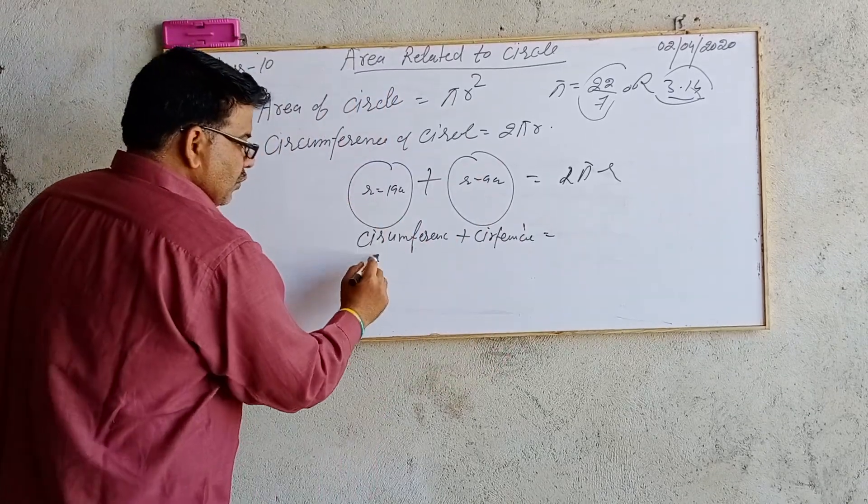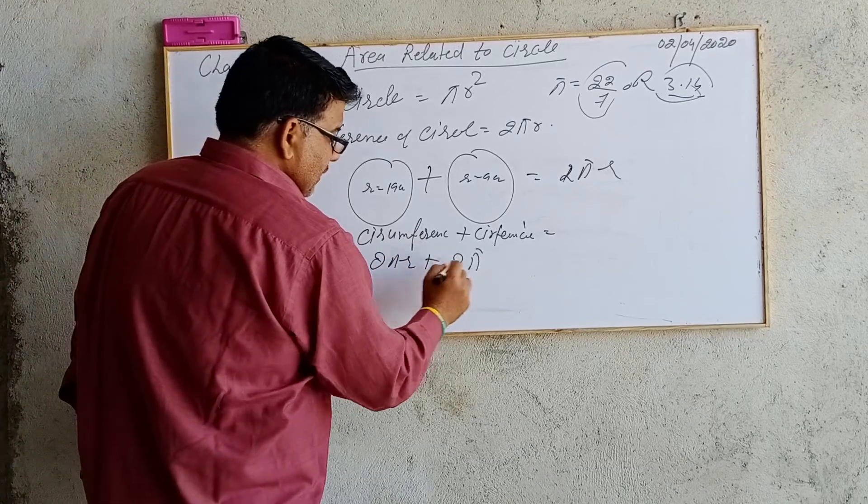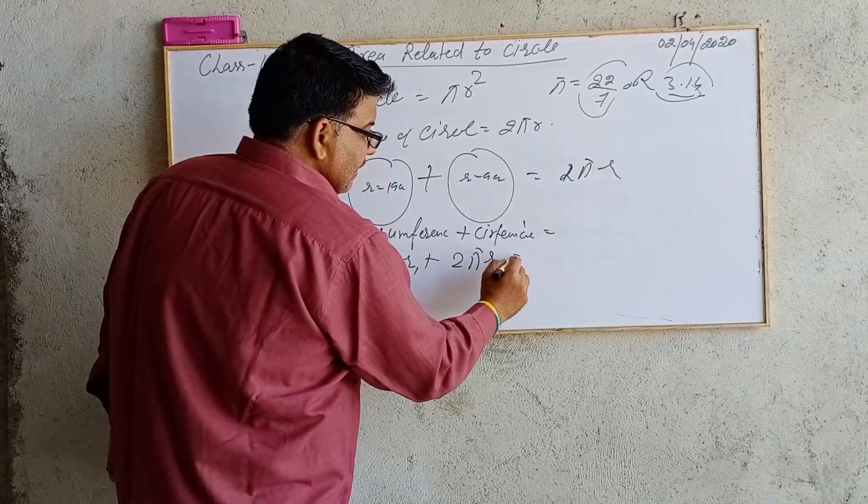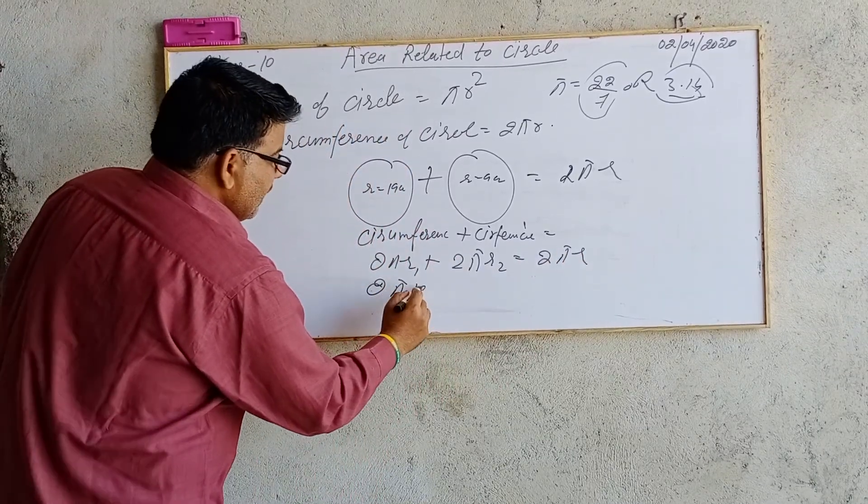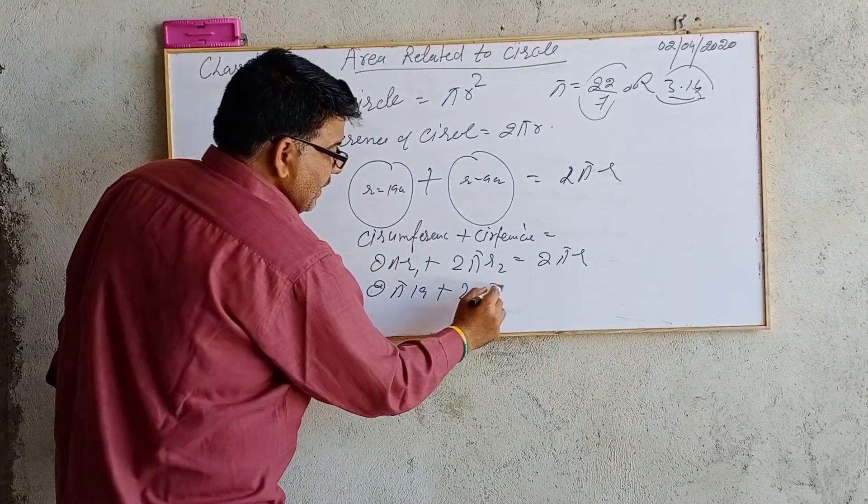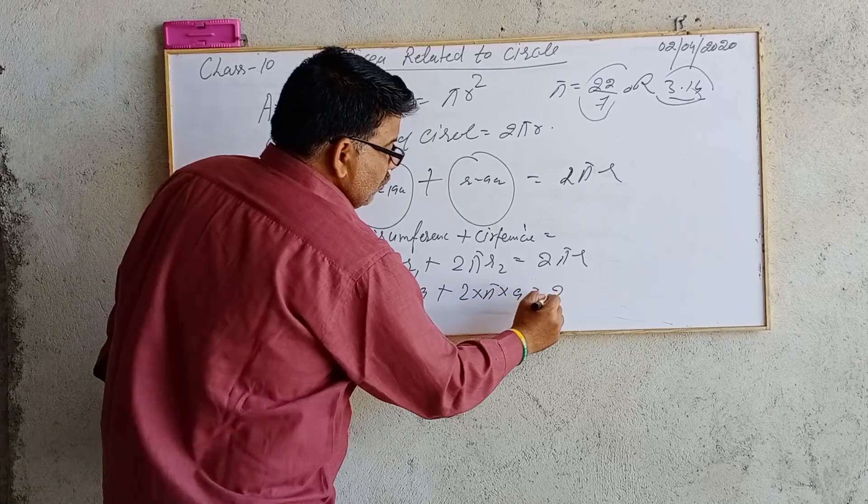We know that 2πr plus 2πr equals 2πr. So 2 into π into 19, plus 2 into π into 9, equals 2πr.